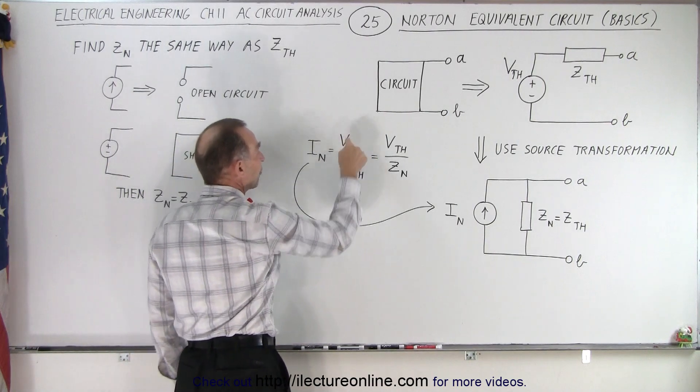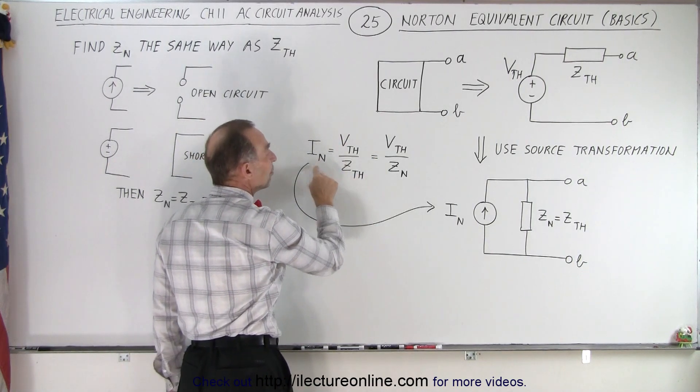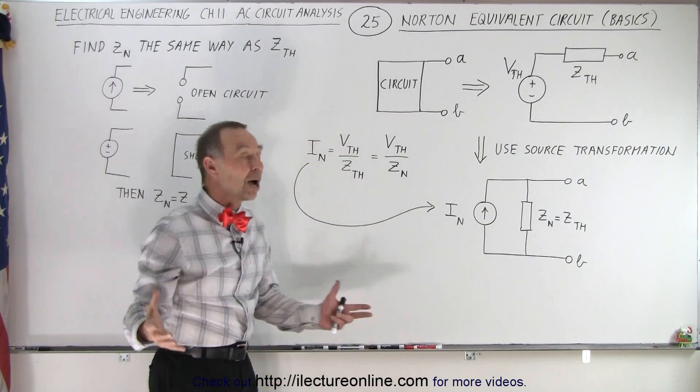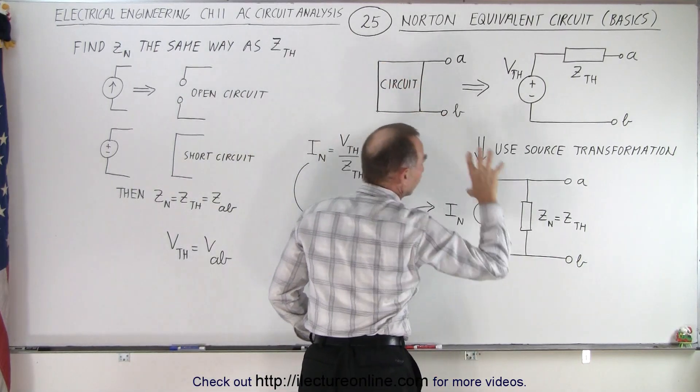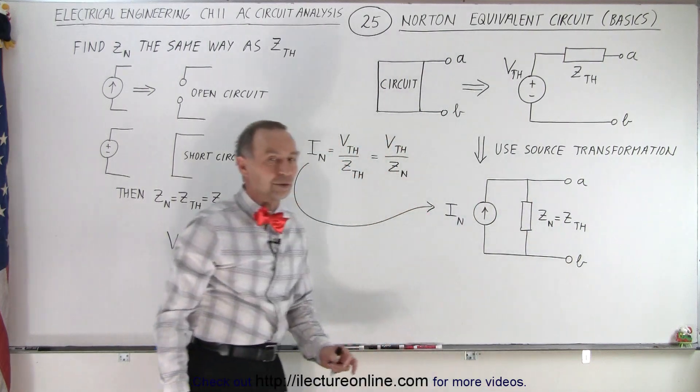Then you simply take the Thevenin voltage, divide it by the Thevenin impedance, and you find the Norton current, and now we have an equivalent circuit. You have the original circuit that looks like this and turn it into a Norton equivalent circuit.